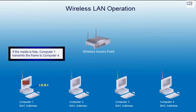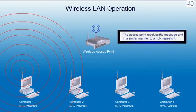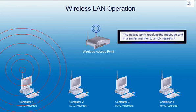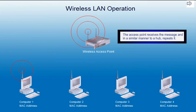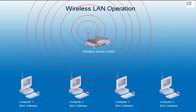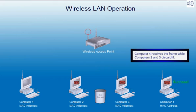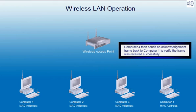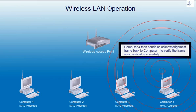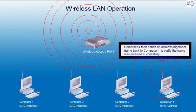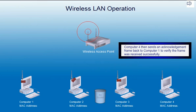If the media is free, computer 1 transmits the frame to computer 4. The access point receives the message and, in a similar manner to a hub, repeats it. Computer 4 receives the frame while computers 2 and 3 discard it. Computer 4 then sends an acknowledgement frame back to computer 1 to verify the frame was received successfully.